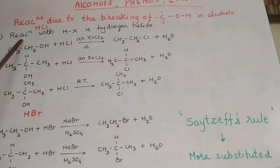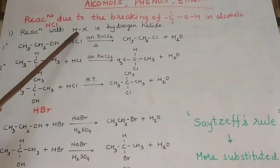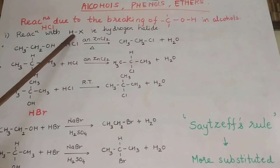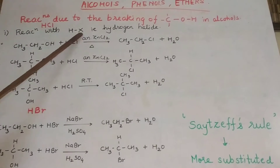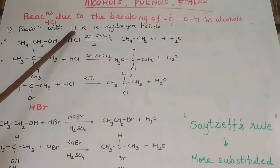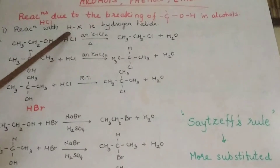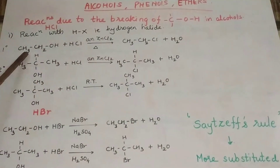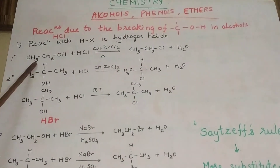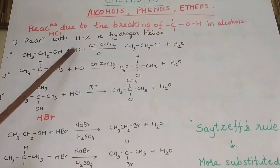Let's go towards the reactions of alcohols. First is the reaction of alcohol with HX — hydrogen halide. Hydrogen halide can be of three types: it can be HCl, it can be HBr, and it can be HI. So let's see the reaction of a primary alcohol with HCl.